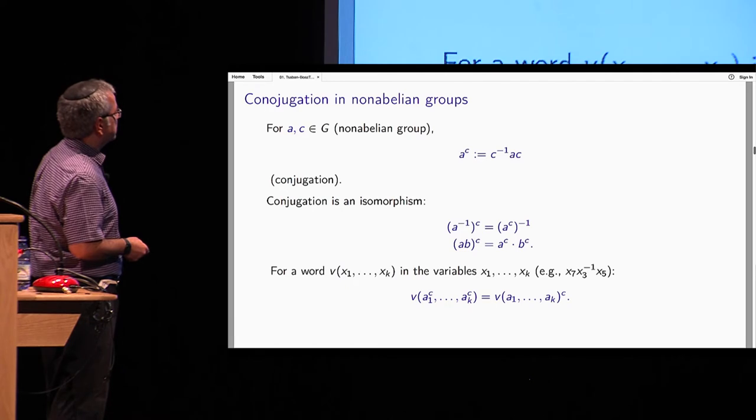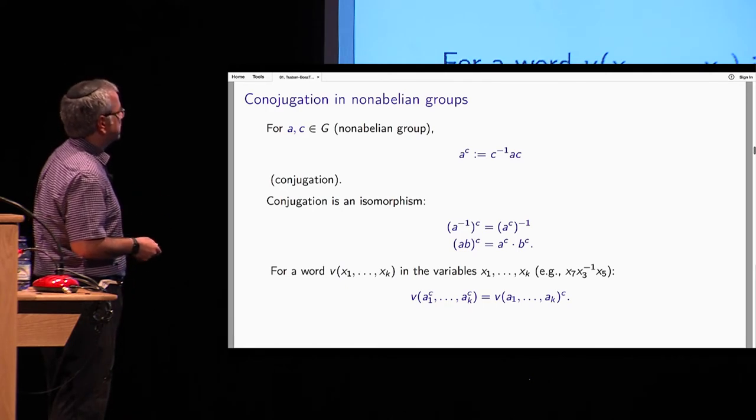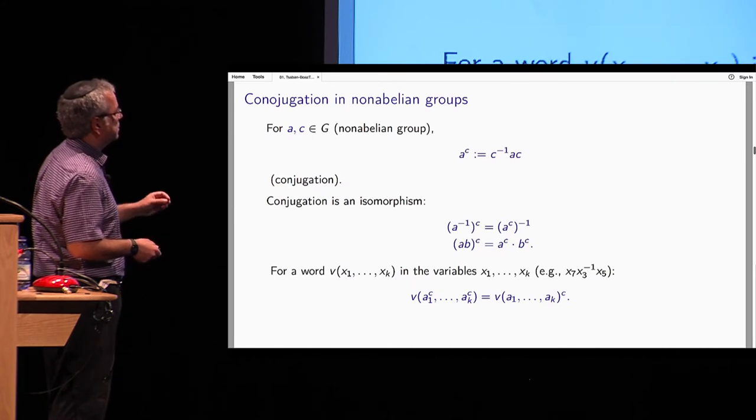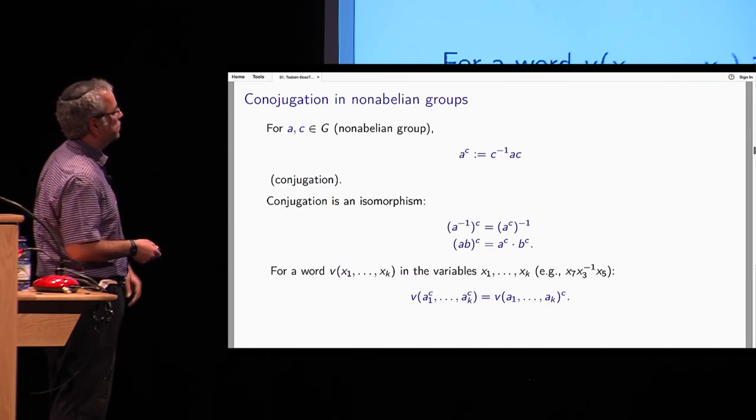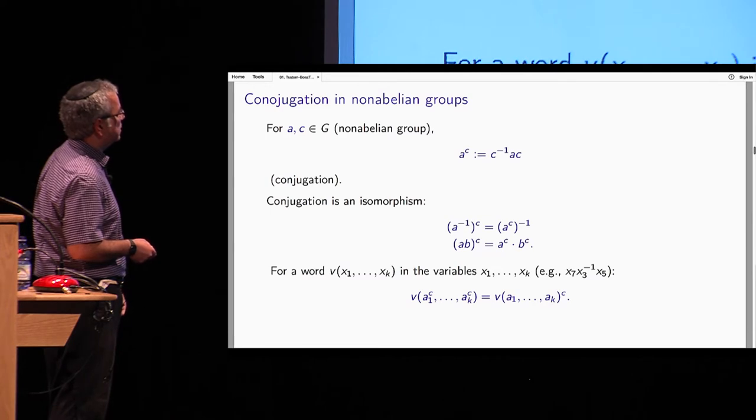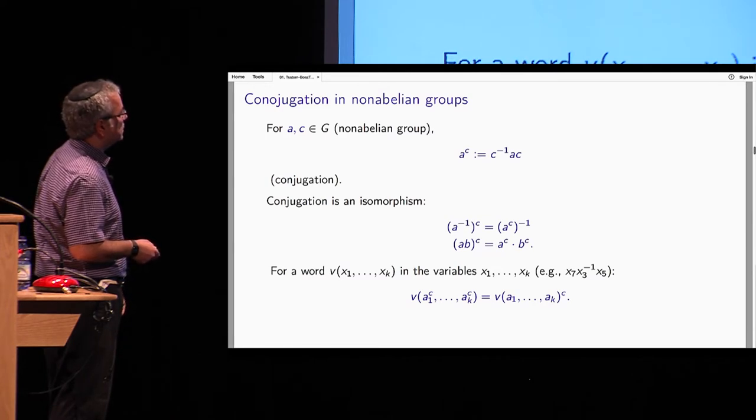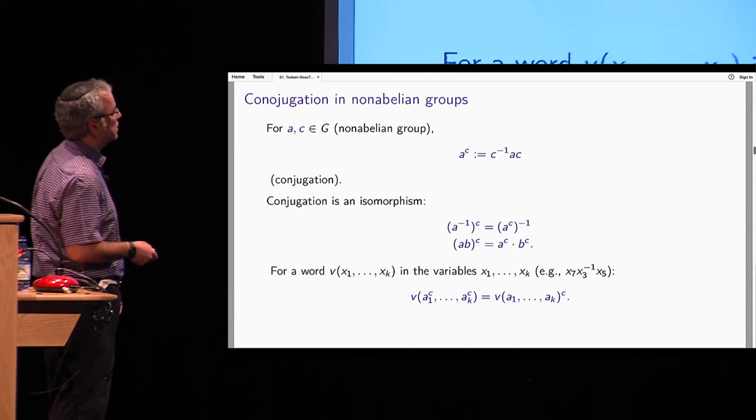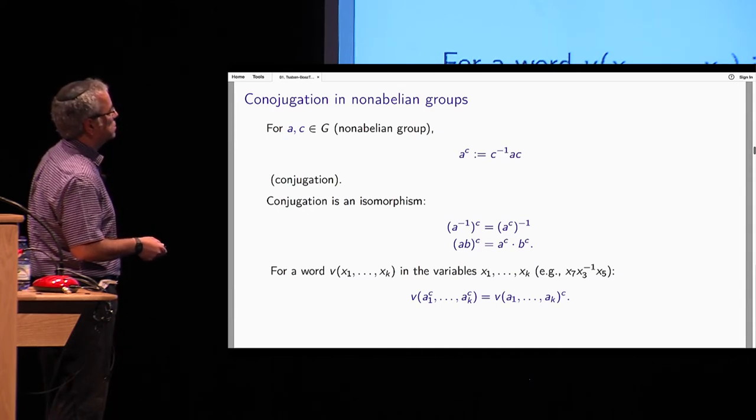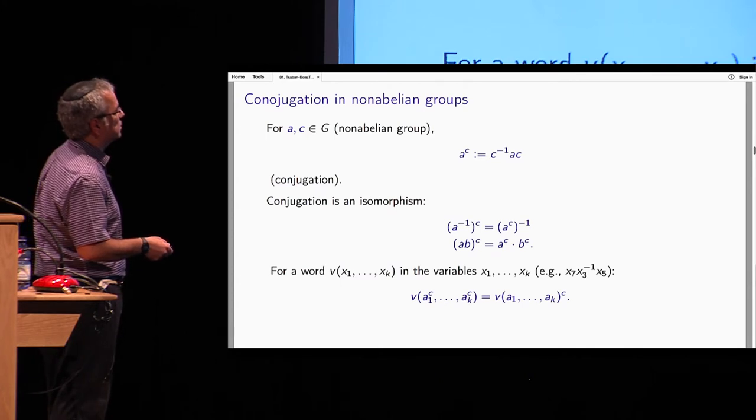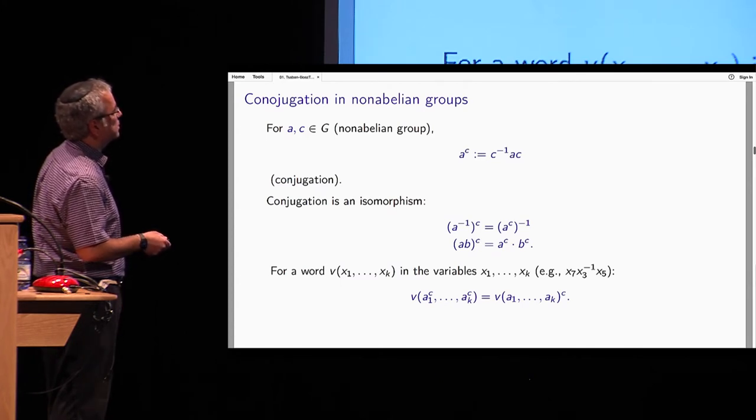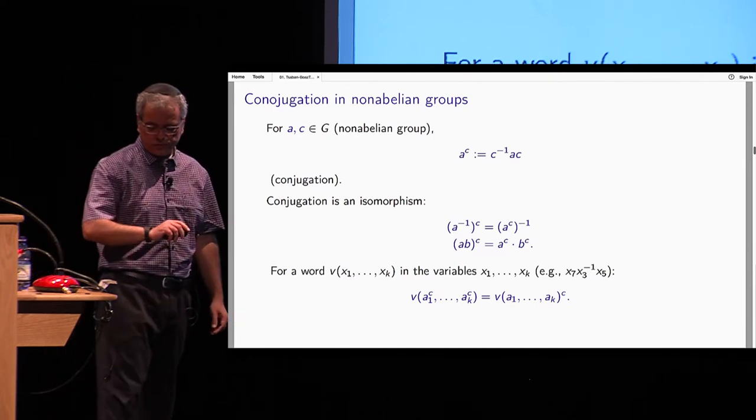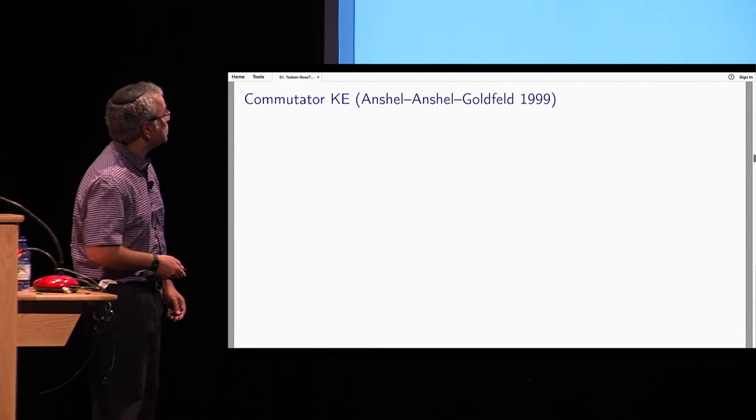G will always be a non-abelian group, means elements do not commute. AC is not equal to CA. And we denote by A to the power C the conjugate of A by C, just this, C inverse AC. This is called conjugation. Conjugation is an isomorphism, it means that it commutes with every group theoretic operation, like multiplication here. You can put it inside, you can swap between it and inversion. So if you invert and then conjugate, it's like conjugating and then inverting.